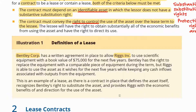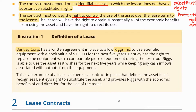This is an example of a lease, as there is a contract in place that defines the asset itself — the scientific equipment — recognizes Bentley's right to substitute the asset, but provides Riggs with the economic benefits and direction for the use of the asset. Both criteria being met means that you have a lease agreement.